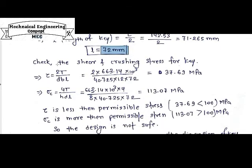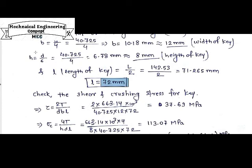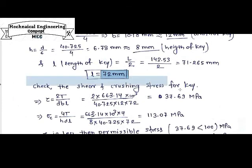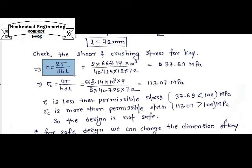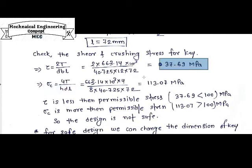Now we check whether the key dimensions are safe enough to bear the load by checking shear and crushing stresses. The equations are: Tau = 2T / (b × d × l) and sigma_c = 4T / (h × d × l). Putting all values, we get Tau = 37.69 MPa and sigma_c = 113.07 MPa.